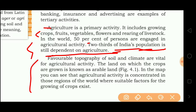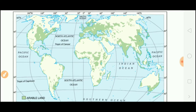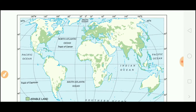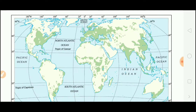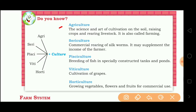The land on which the crops are grown is known as arable land. You can see the map — the green area is all arable land where crops are grown. Agriculture is the science and art of cultivation on the soil, raising crops and breeding livestock. It is also called farming.